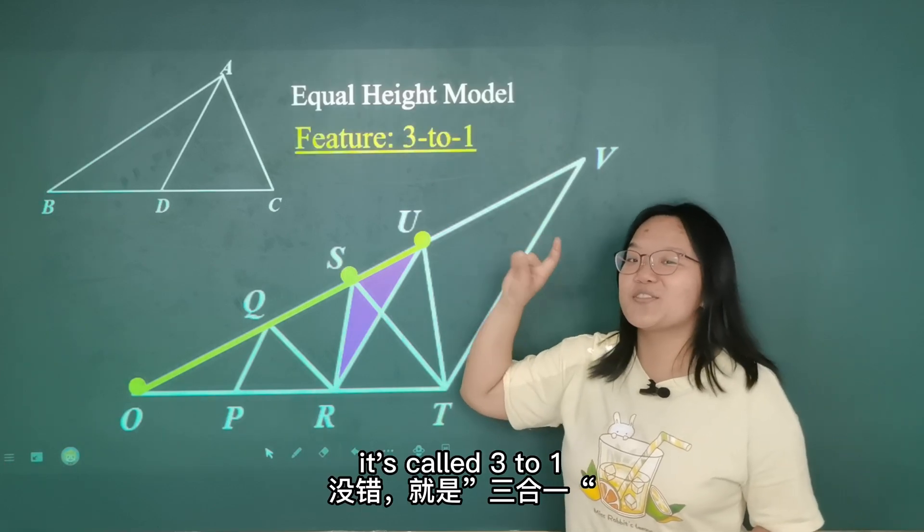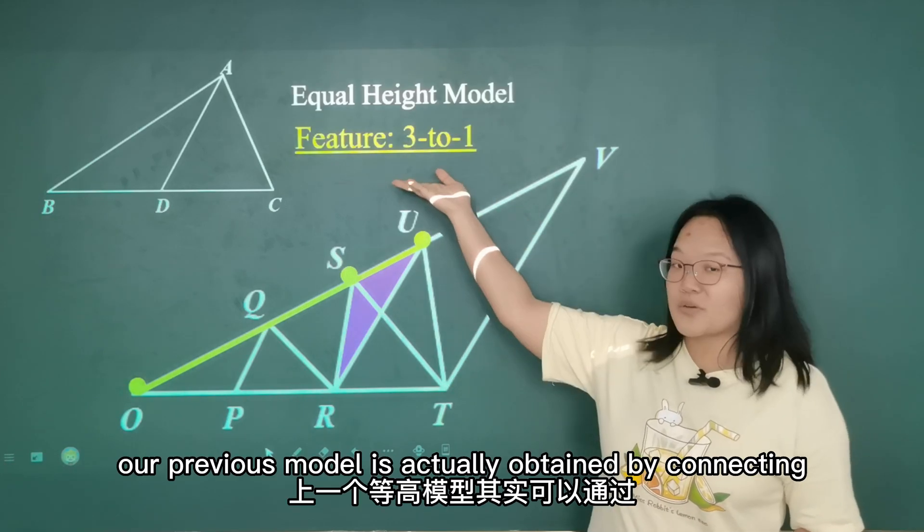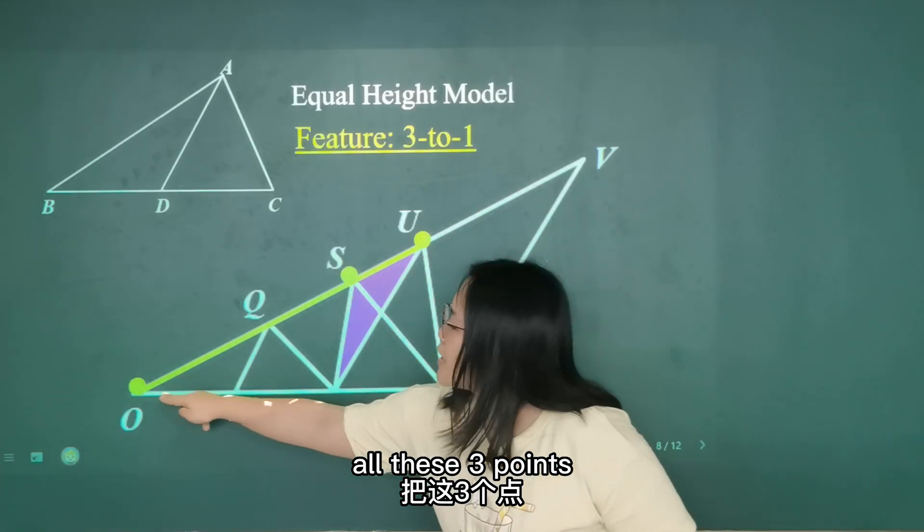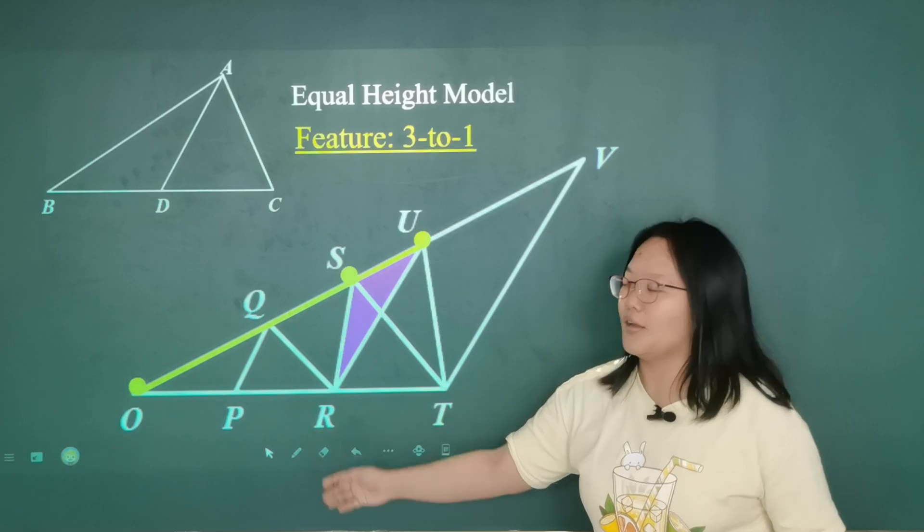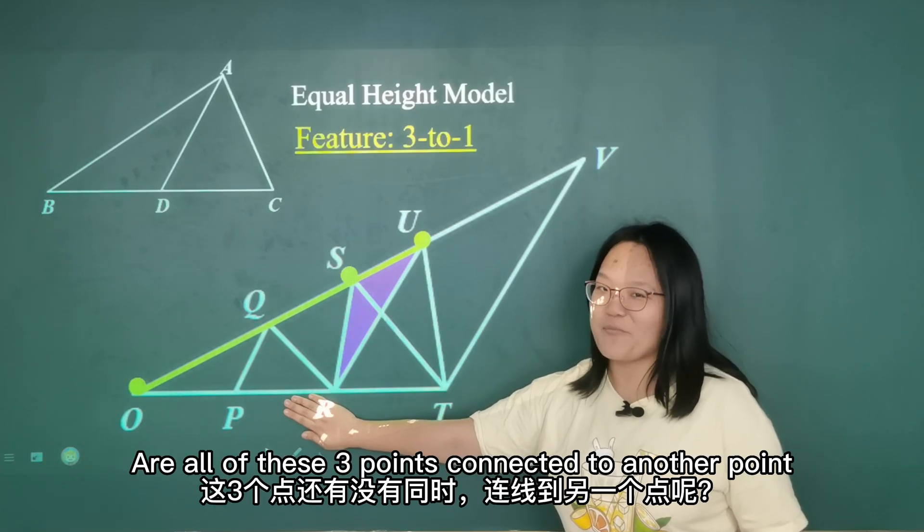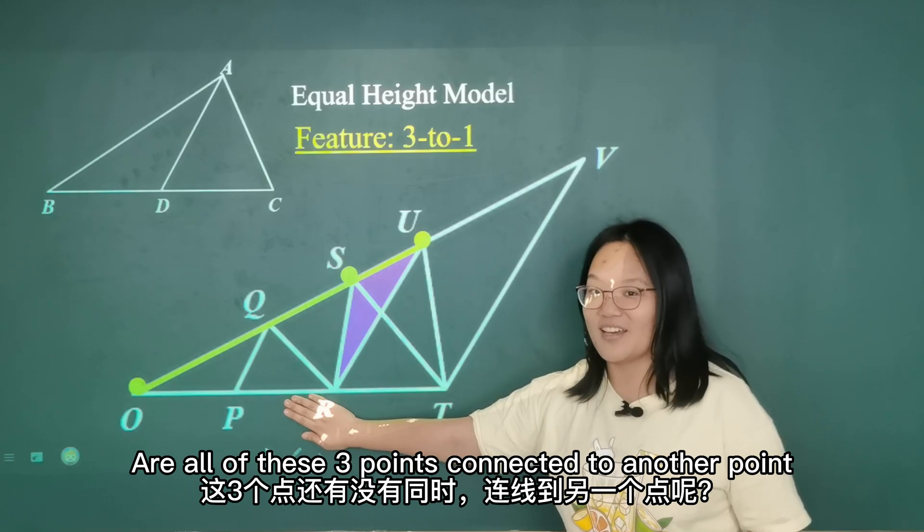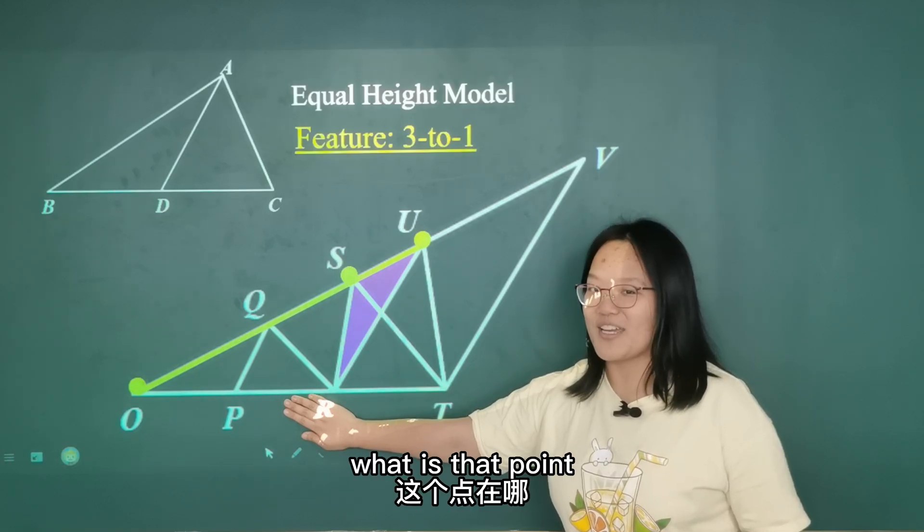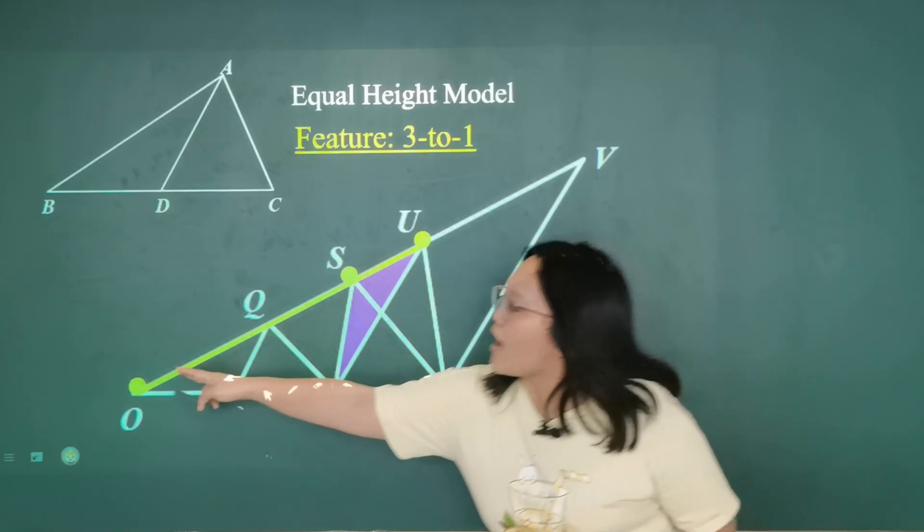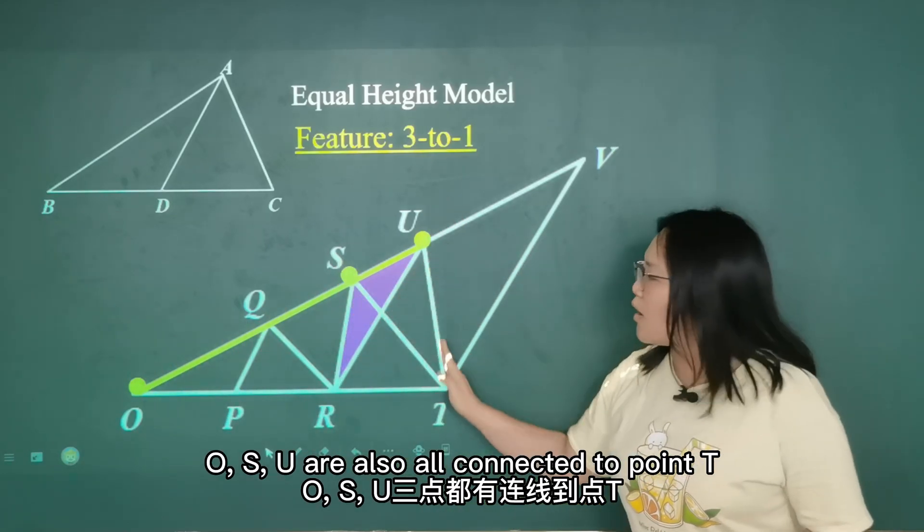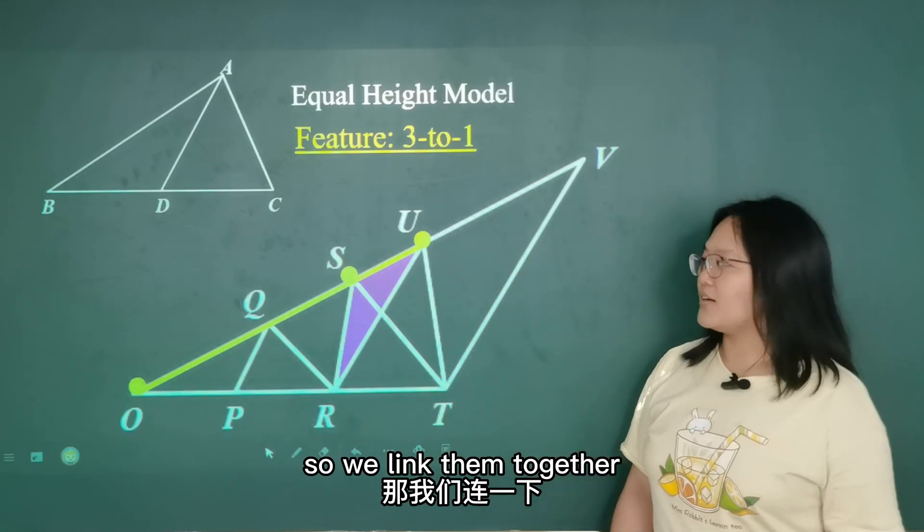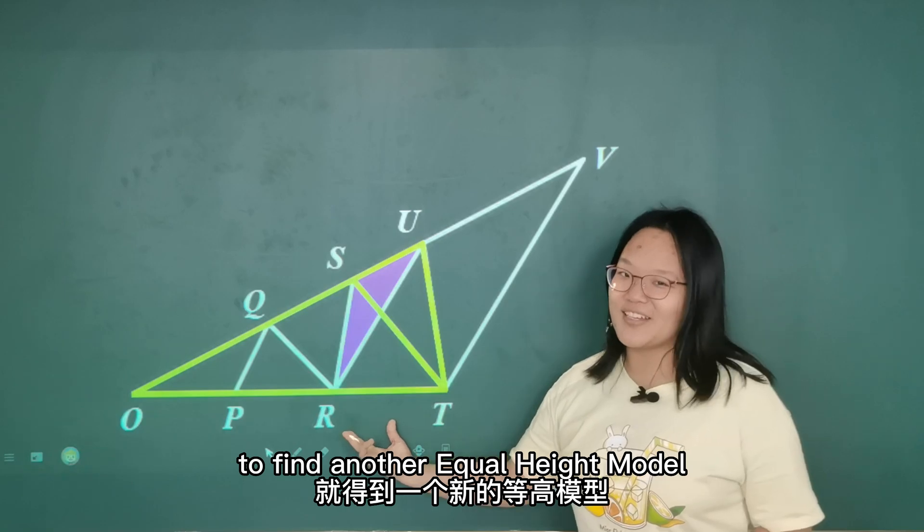So our previous model is actually obtained by connecting all these three points to point R. Now I take away point R. Are all of these three points all connected to another point? What is that point? Yes, it is point T.